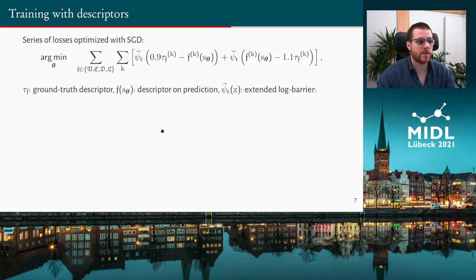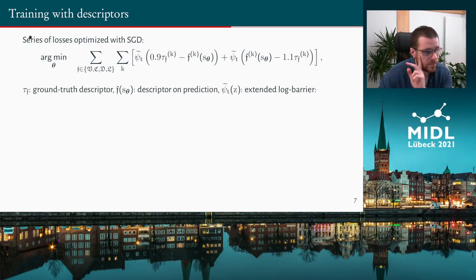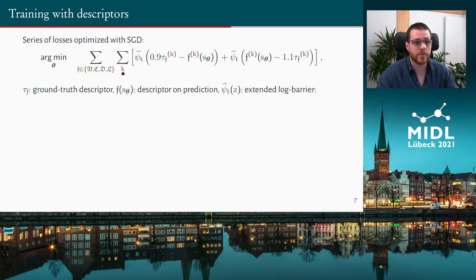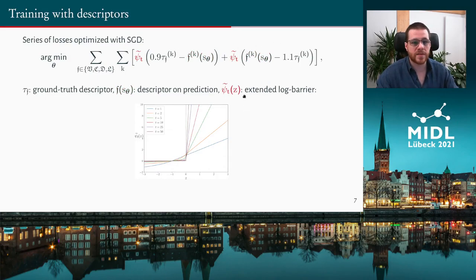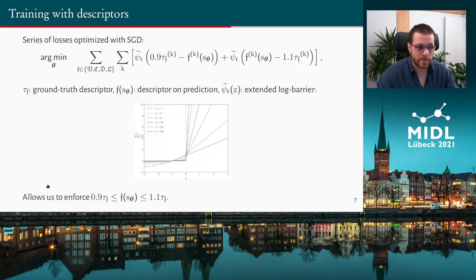Now let's focus on how we can supervise a neural network without any pixel-wise supervision. What we do amounts to a series of losses that we can optimize directly with stochastic gradient descent. For each descriptor and each class we want to supervise, we have two values: f*, the ground-truth descriptor — the values we aim for — and f computed with the softmax probabilities as input. We put all that into an extended log barrier. What this allows is to enforce, in a smooth and progressive way, that the descriptors on the predicted segmentation remain between two bounds: the ground-truth descriptors plus or minus 10%.